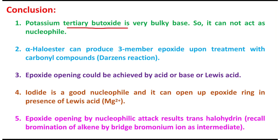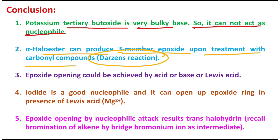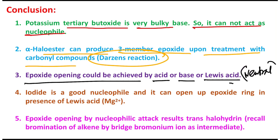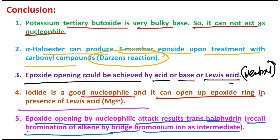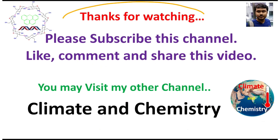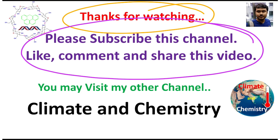In conclusion, key learning points from this video: potassium tertiary-butoxide is a very bulky base and cannot act as a nucleophile — it selectively acts as a base. The alpha-halo ester can produce a three-membered epoxide ring upon treatment with a carbonyl compound — this is Darzen's reaction. Epoxide opening can be achieved by acid, base, or Lewis acid (neutral medium). Iodide is a good nucleophile and can open epoxide rings in the presence of a Lewis acid like Mg²⁺, resulting in a trans-iodohydrin. You can also recall the concept of bromination of alkenes via a bromonium ion. Thank you, stay happy, stay blessed — see you in my next video!